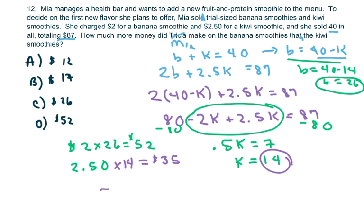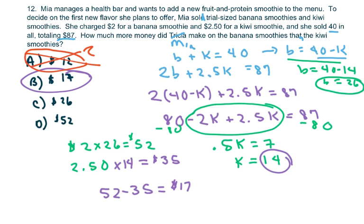Now subtract. So you get fifty-two minus thirty-five, which equals seventeen. So your answer is B. Be really careful with this one right here. That would not be the correct answer. You have to be careful when you're reading it.